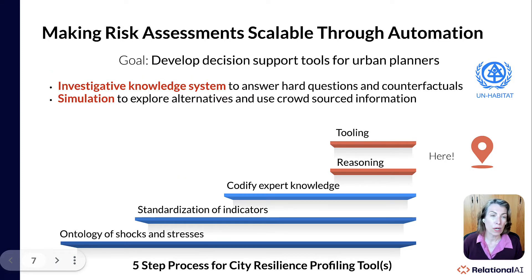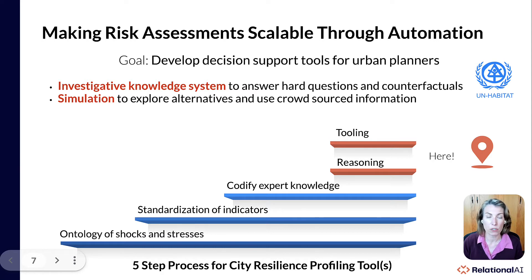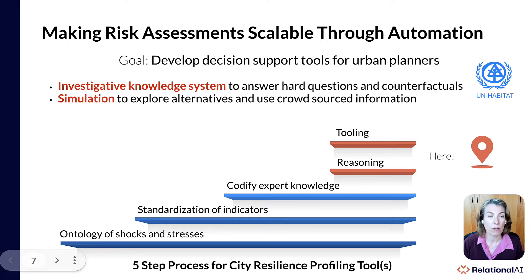The UN Habitat goal was to develop decision support tools for urban planners and make those risk assessments scalable through automation. Relational AI was able to help with two core elements: an investigative knowledge system to answer hard questions and do counterfactuals in simulation so you could explore alternatives, and sourcing information from public and local sources.